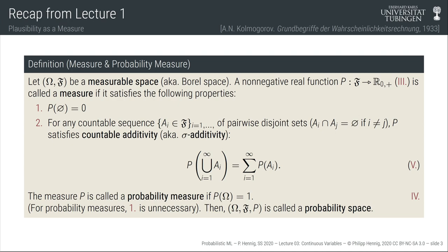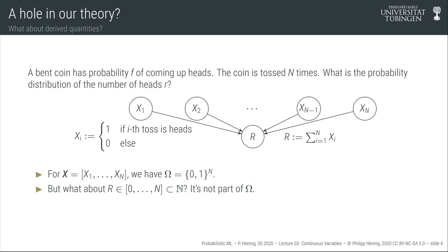But almost all the time there are reasoning processes in which we want to talk about derived variables — variables that aren't directly the ones on which we define the sigma algebra. Consider this: we have one coin, we throw it n times, each throw has probability f of coming up heads, and throws are independent. Every throw creates a binary variable x1 to xn. A natural question is: what's the probability that n coin tosses produce exactly r heads and n minus r tails?